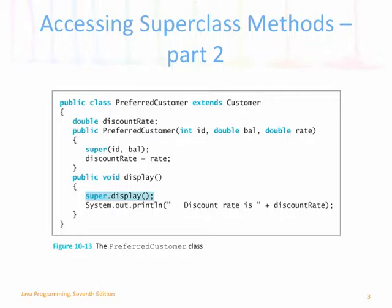For example, if we have a class called PreferredCustomer that extends Customer, we add a discount rate and we've got our constructor. The constructor for PreferredCustomer has three parameters: id, bal, and rate. The first thing it does inside that constructor is call super(id, bal), passing those two arguments to the superclass constructor. The first line of that constructor must be a call to the superclass. And then it adds discountRate equals rate — anything added in the subclass follows the call to the superclass.